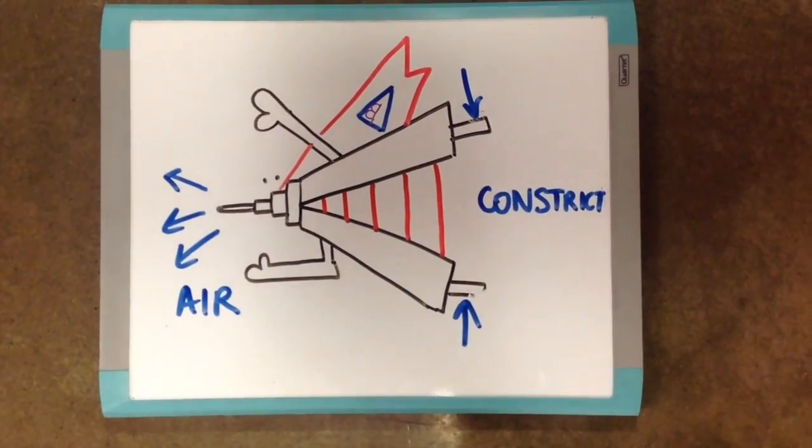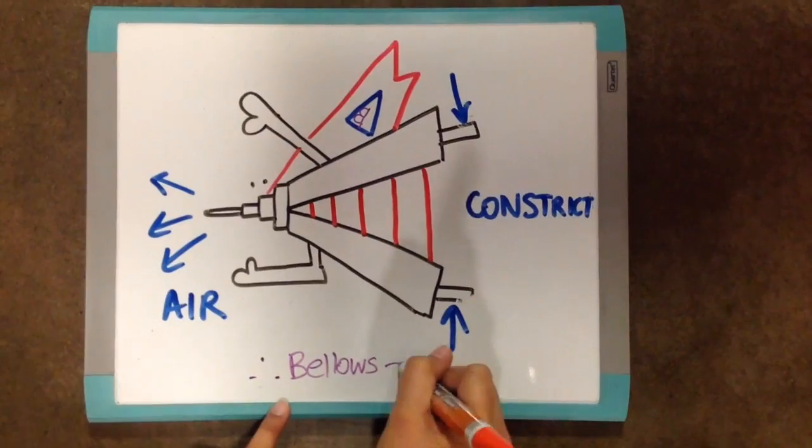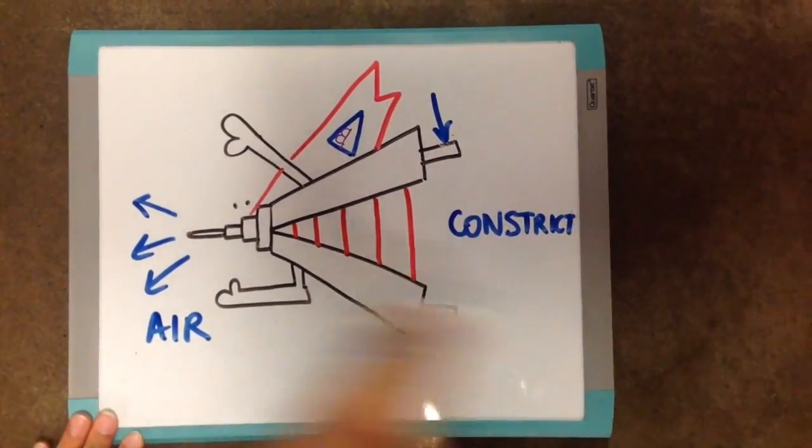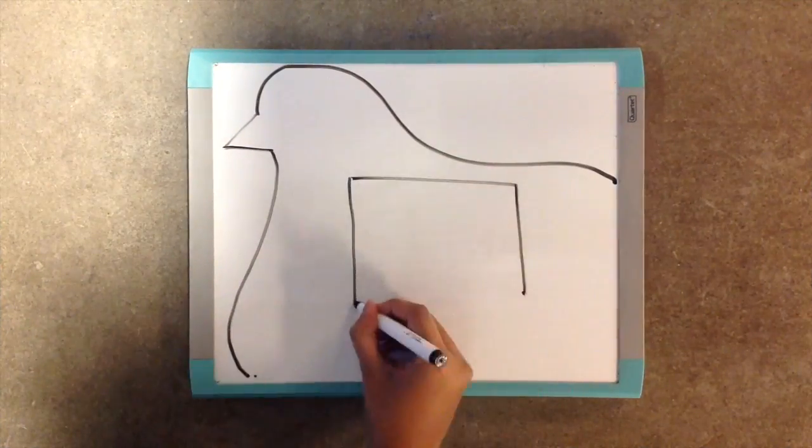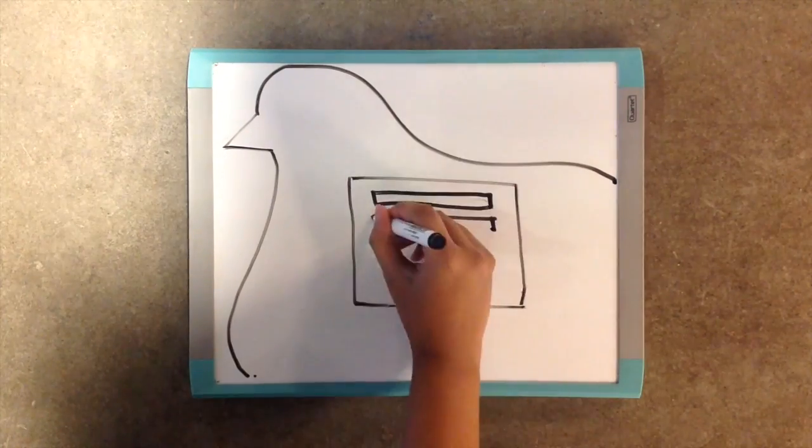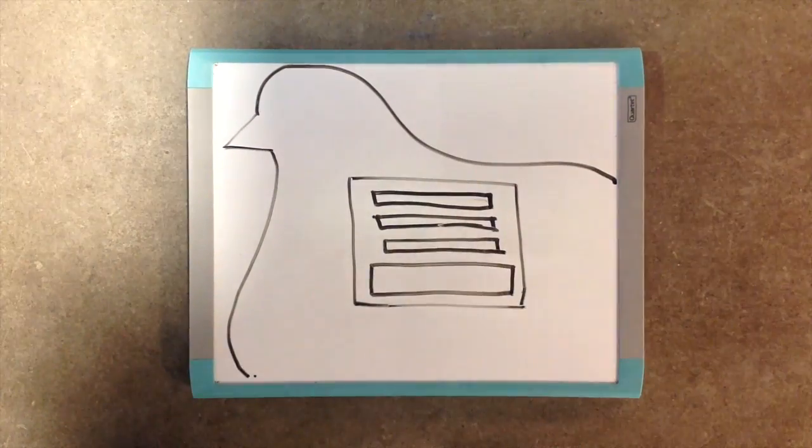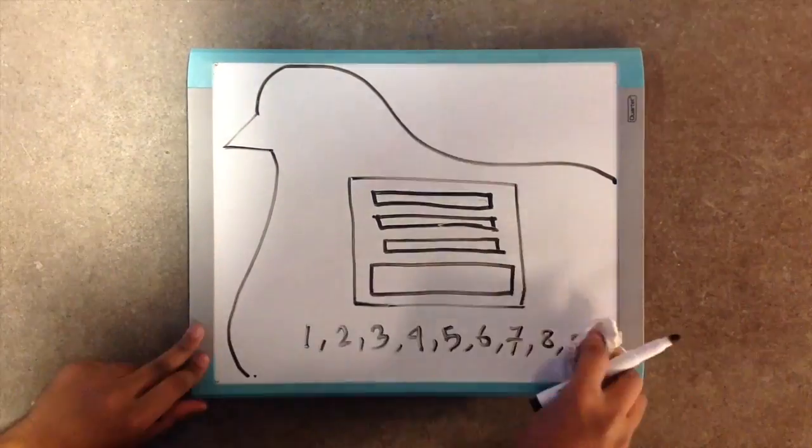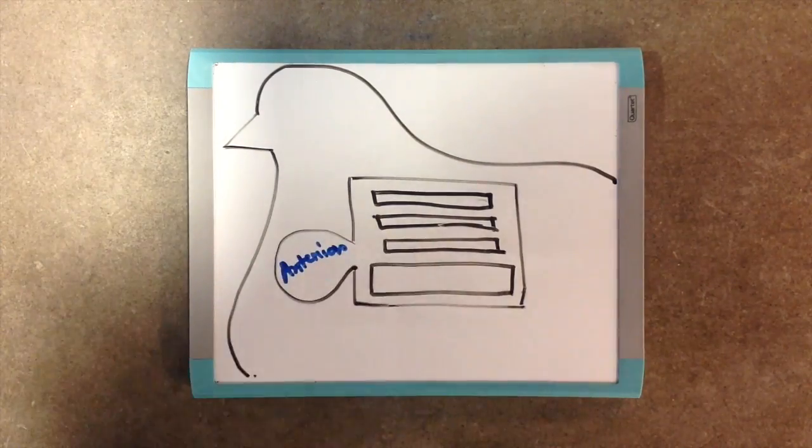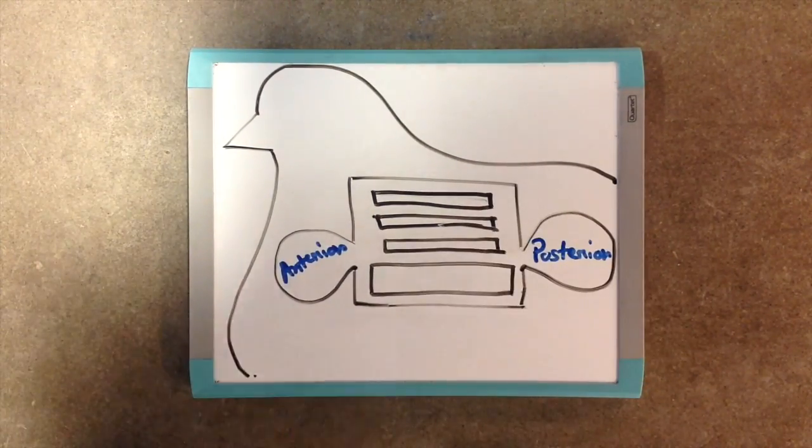In a bird, the bellows are the air sacs located outside the lungs. Birds have nine air sacs, but for simplicity, the ones at the front are anterior and the ones at the back are posterior air sacs.